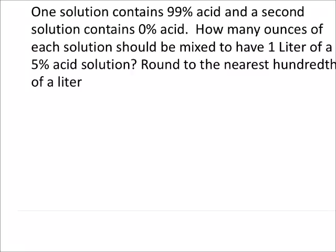One solution contains 99% acid and a second solution contains 0% acid. How many ounces of each solution should be mixed to have 1 liter of a 5% acid solution? Round to the nearest hundredth of a liter. So we want to know how many liters of each solution should be mixed.